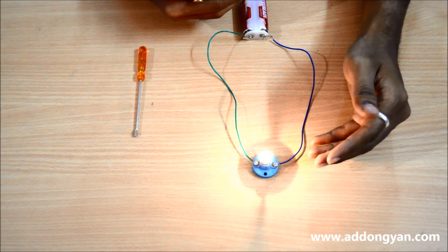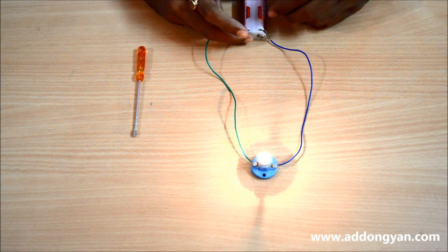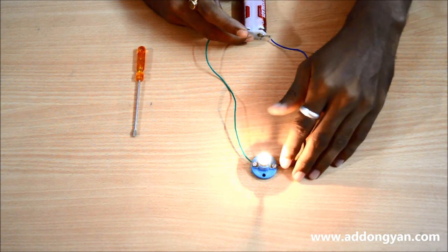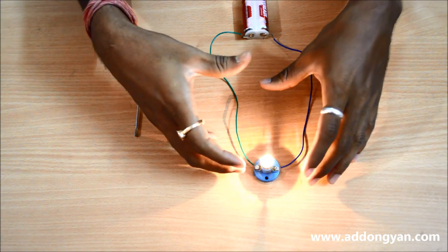So this is how it works. The electrical energy, the current which is stored in the battery, is actually traveling to the bulb and back to the battery. Hence, when I completed my circuit, the bulb started glowing.